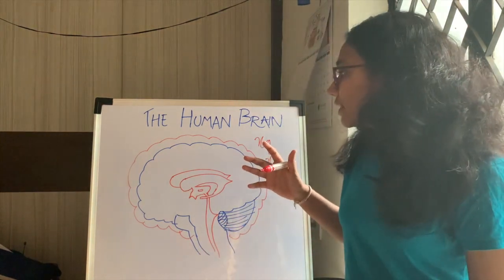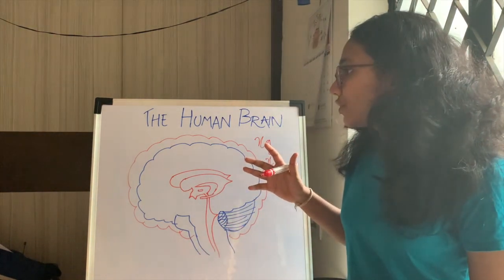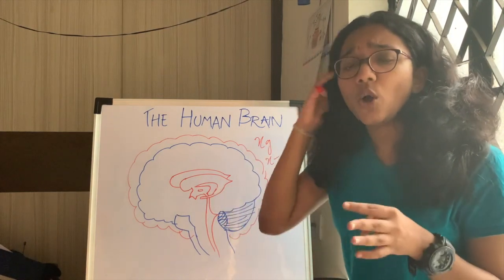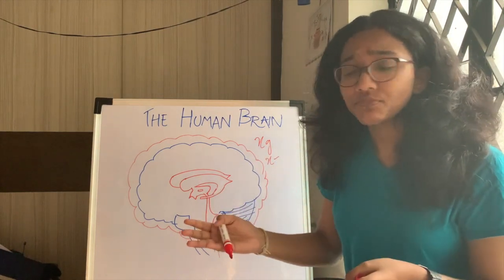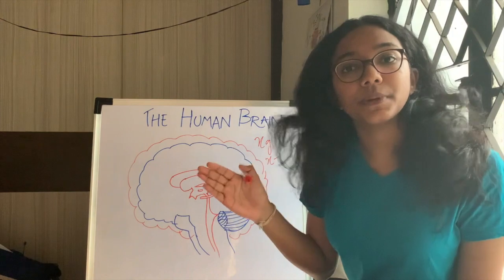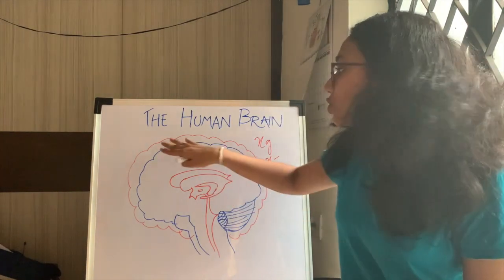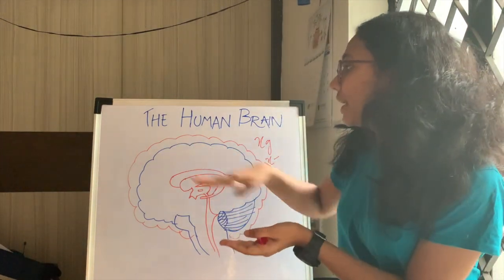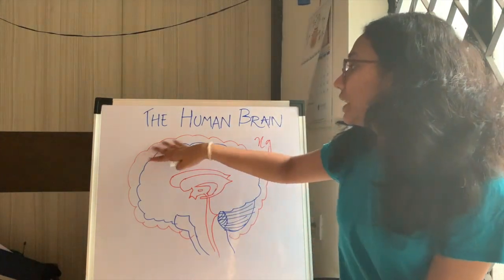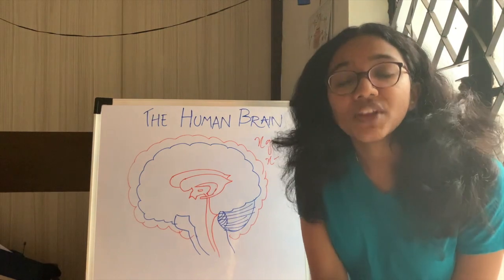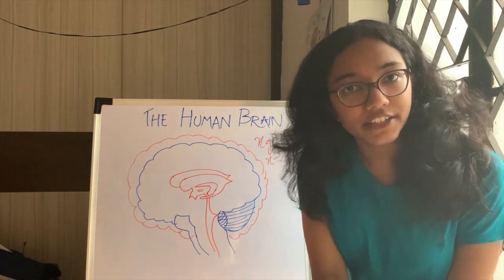The second function it gives is protection. Whenever there is some kind of disturbance towards the brain or on the head, it does not directly impact the brain because of the cushioning effect provided by this layer of cerebrospinal fluid.